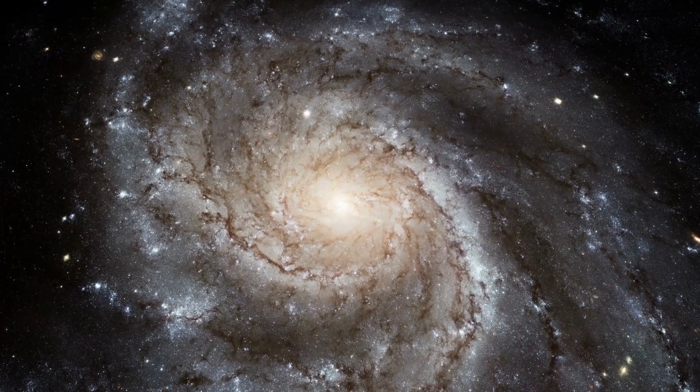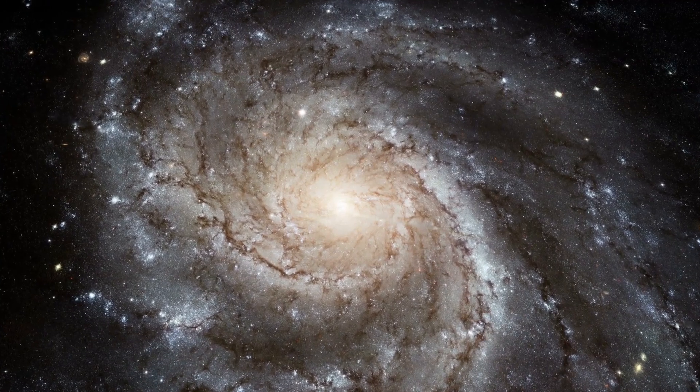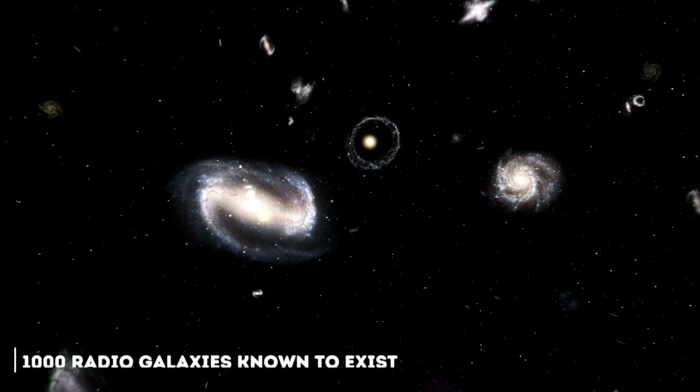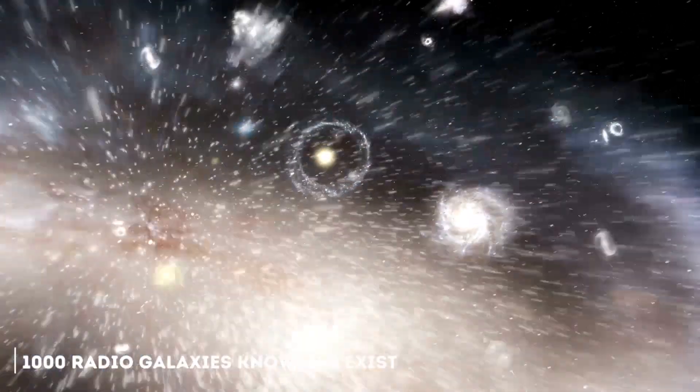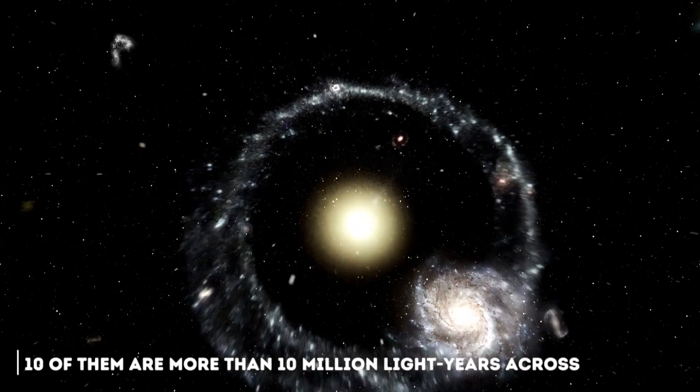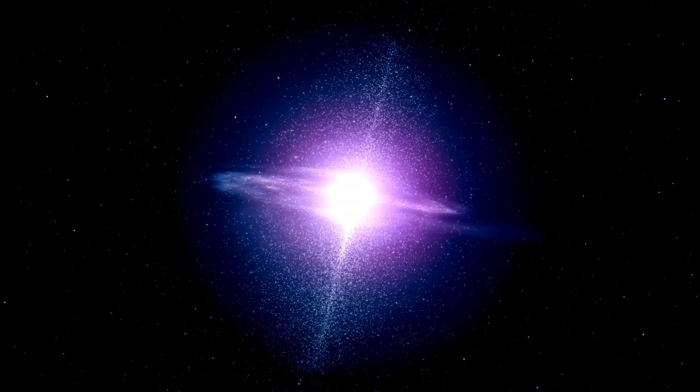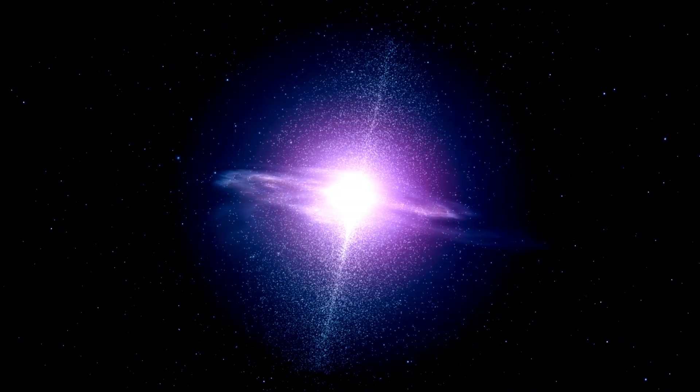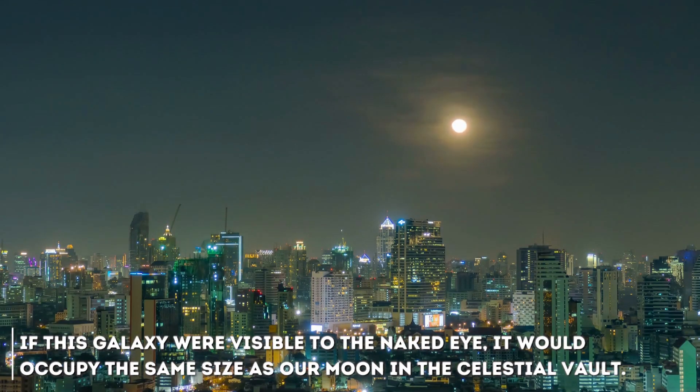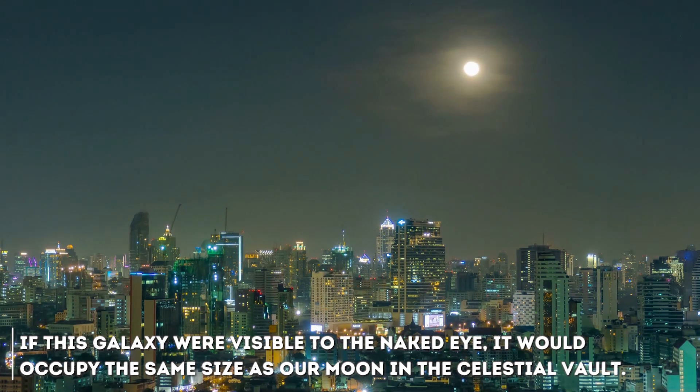Here we must take a moment and weigh our knowledge especially about this particular type of galaxy. To date, there are approximately 1,000 radio galaxies known to exist, of which only 10 of them are more than 10 million light years across. With its size and being located 3.5 billion light years away, if this galaxy were visible to the naked eye, it would occupy the same space as our moon in the celestial wall.